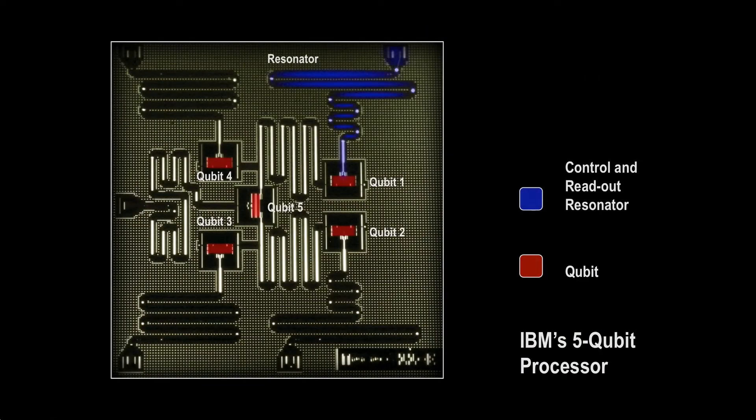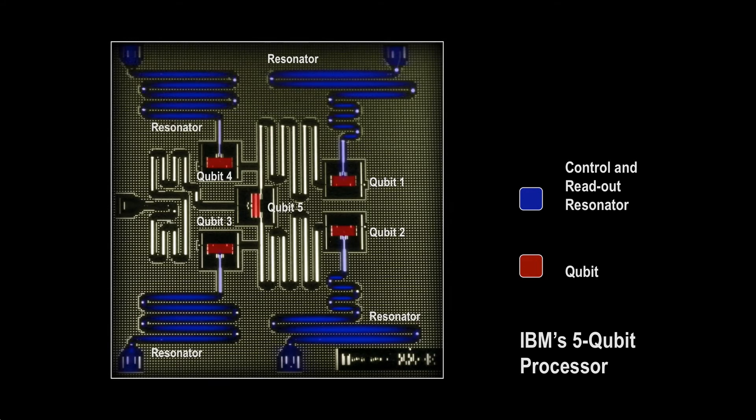So how do we control and measure these qubits? We measure the qubit by coupling it to a superconducting transmission line resonator. You can engineer the circuit such that the readout resonator frequency depends on the state of the qubit. By probing the resonant frequency, you can determine if the qubit is in the zero or the one state.